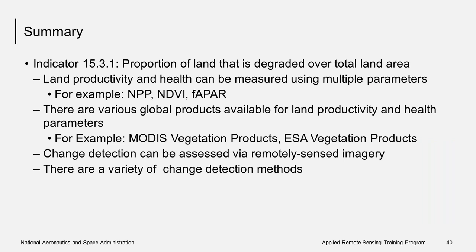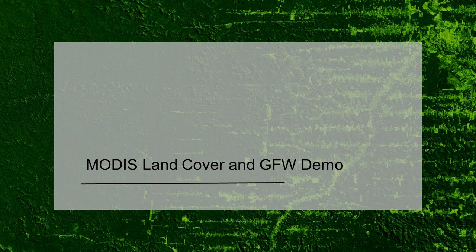In summary, in order to address SDG Indicator 15.3.1, you can use products derived from satellite imagery to determine vegetation productivity, including NPP, NDVI, and FPAR. There are existing productivity products available from MODIS and from ESA. You can assess land cover change with satellite imagery using several different methods, but note that all land cover mapping and change detection methods require extensive ground information for validation. At this point, I'm going to turn it over to Amber McCollum to do a demonstration on Global Forest Watch.